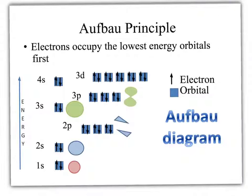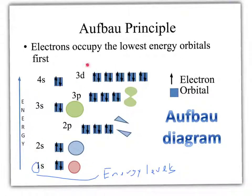He started with the lowest energy level — these numbers correspond to energy levels: one, two, three, and then four. These letters like S, P, and D — we're going to learn later there's also F — but these are called the sublevels.